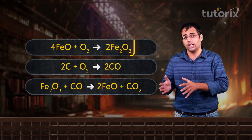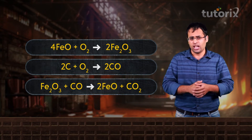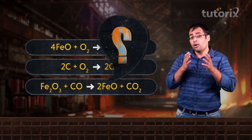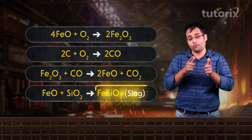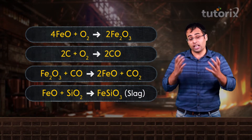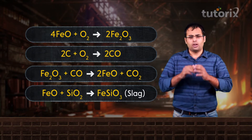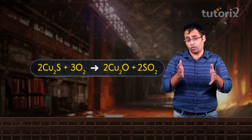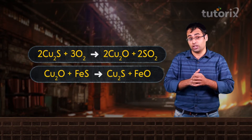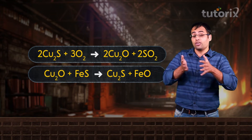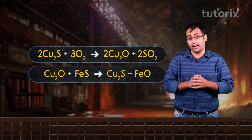An important point here is that coke not only burns and acts as a fuel to produce heat, but also prevents the re-oxidation of ferrous oxide to Fe₂O₃ by reducing it back to ferrous oxide. We need to keep iron in the form of ferrous oxide because it is only ferrous oxide which reacts with acidic silicon dioxide flux to form ferrous silicate slag and can be removed easily. However, surprisingly, a side reaction occurs where the cuprous oxide again reacts with ferrous sulphide to convert back into cuprous sulphide and ferrous oxide.